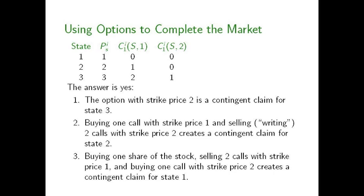And finally, by buying one share of the stock, selling two calls with strike price one, and buying one call with strike price two, you can verify that you end up with a dollar in state one and zero otherwise. With that portfolio you have synthesized a contingent claim for state one.